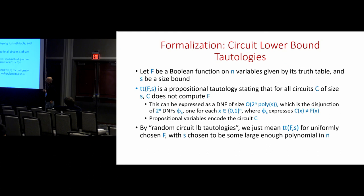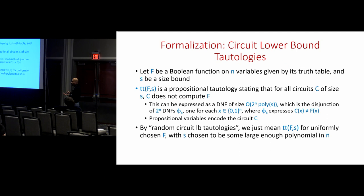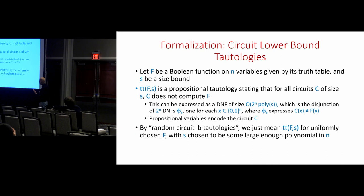Take a Boolean function f on n variables given by its truth table and a size bound s. You form a propositional tautology in DNF stating that for all circuits C of size s, C doesn't compute f. This can be expressed as a DNF of size 2^n · poly(n, s), where you have a disjunction over all 2^n inputs x of clauses expressing that C fails to compute f on input x. The propositional variables encode the circuit C. By random circuit lower bound tautologies we mean such tautologies for uniformly chosen f with the circuit size parameter chosen to be a large enough polynomial in n.